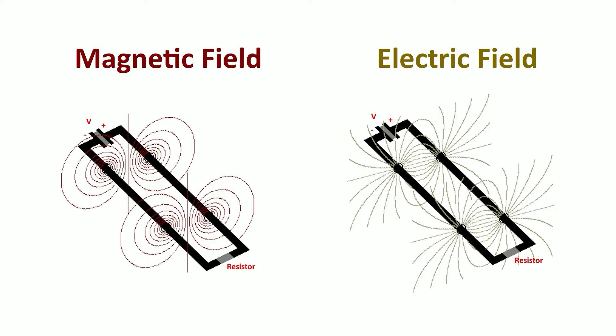On the right we have these yellowish lines - that's what the electric field looks like. Because you have a battery with a plus and minus, one of the wires is plus, the other wire is minus, and so between those two plus and minus charges you get what is known as an electric field. And you may notice that the electric field is perpendicular to the magnetic field.